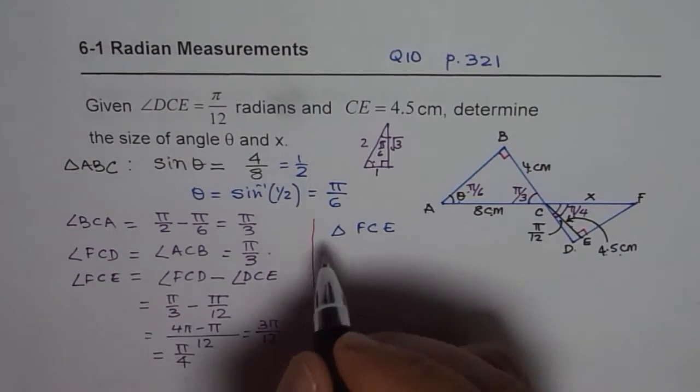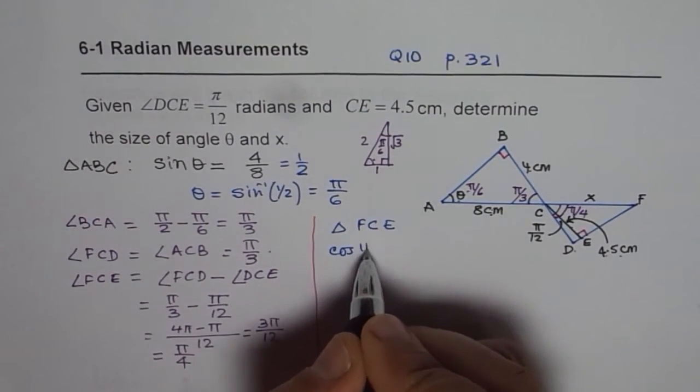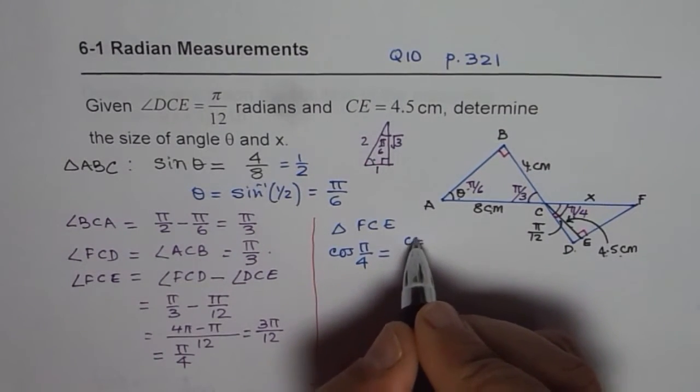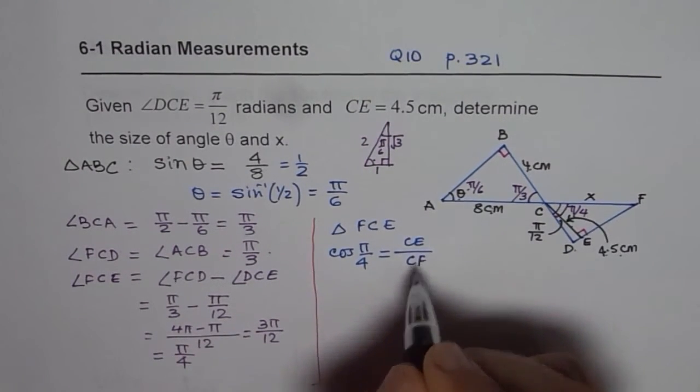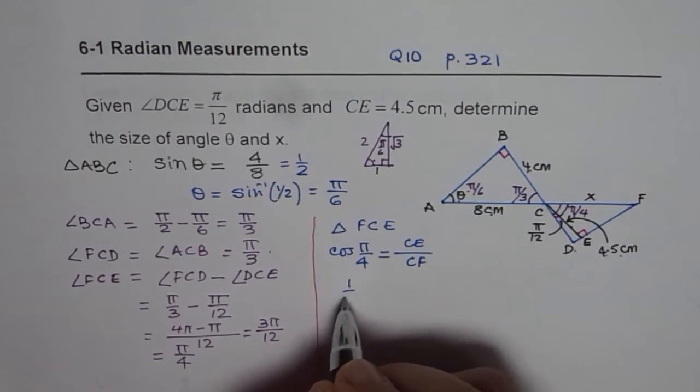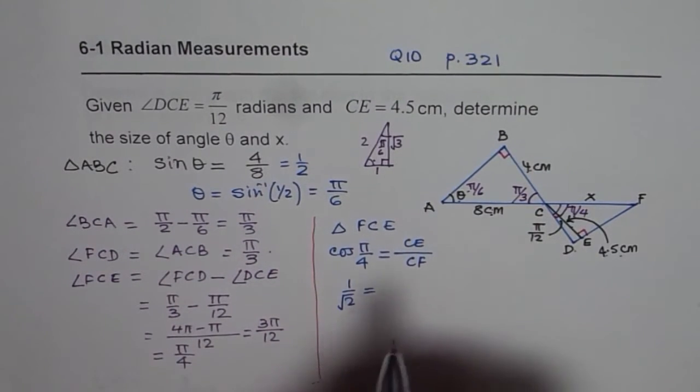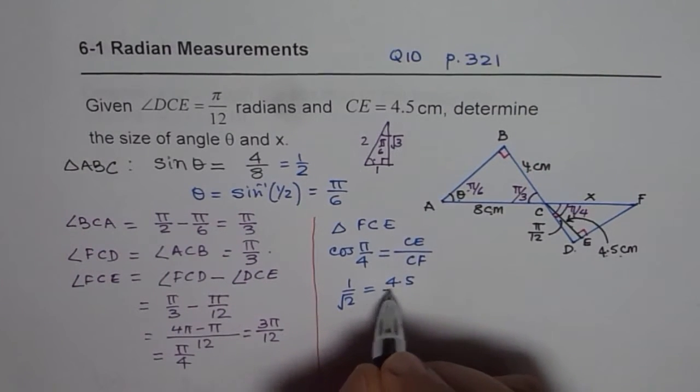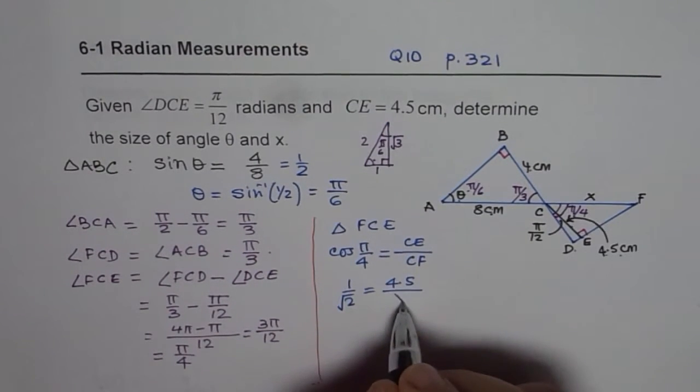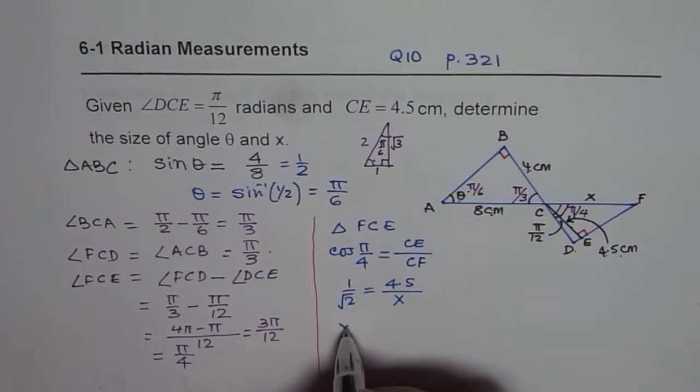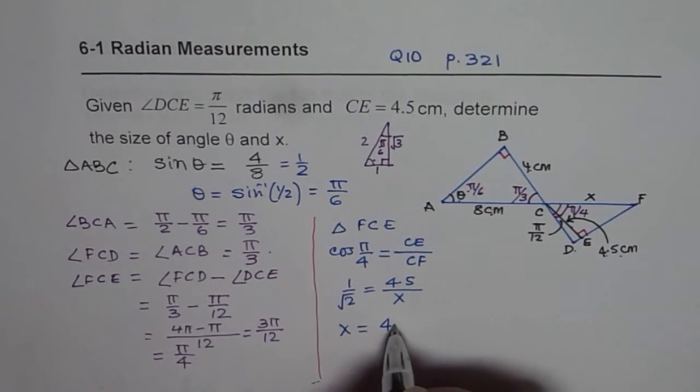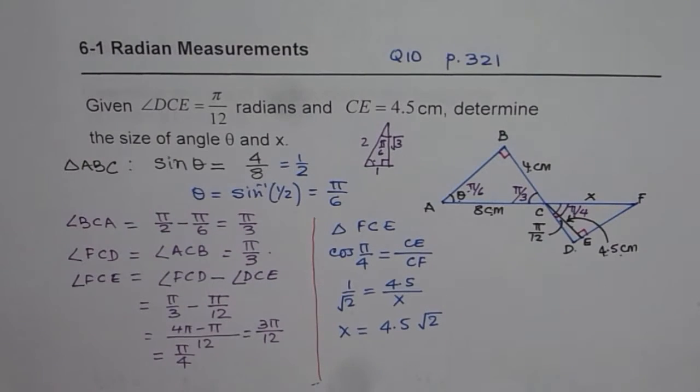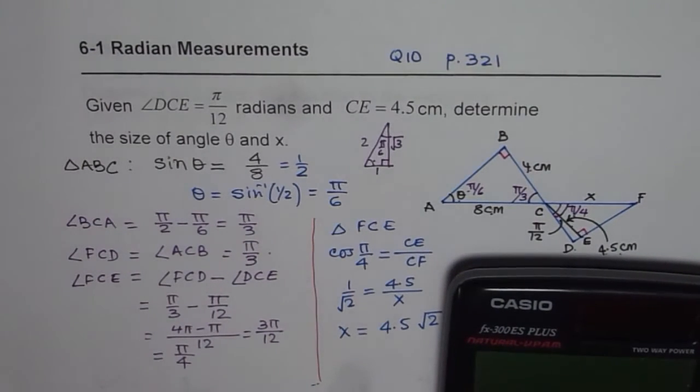So that becomes adjacent side. So we will use cos of π/4. So we will use cos of π/4 is equal to CE over CF. Now cos of π/4 is 1 over √2. CE is given to us as 4.5. CF we need to find which is x. Cross multiply. So x is 4.5 times √2.